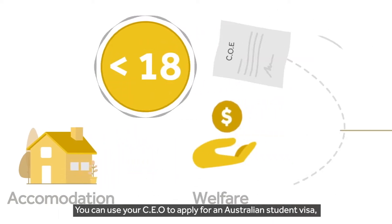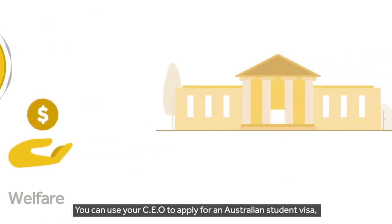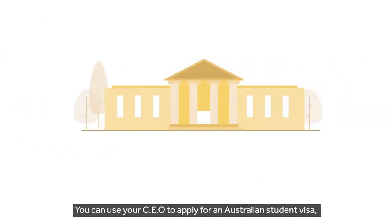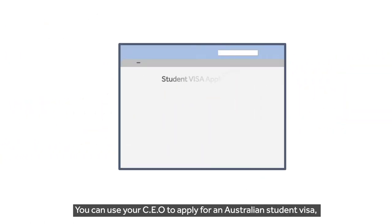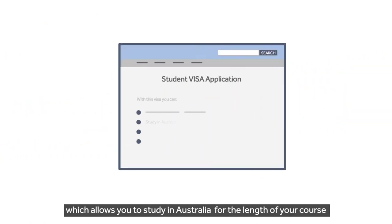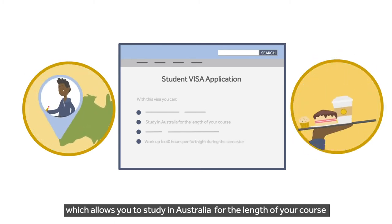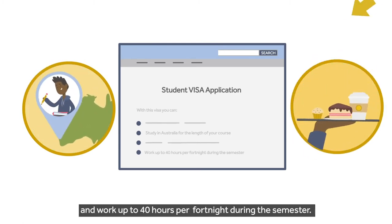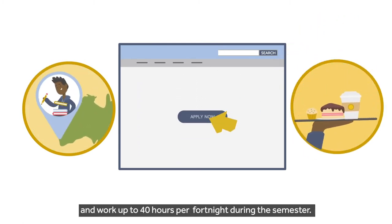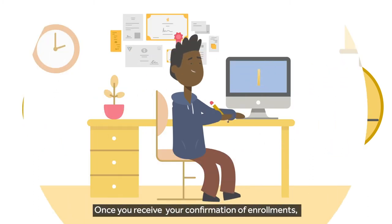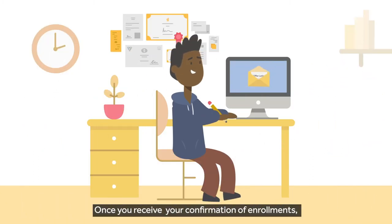You can use your COE to apply for an Australian student visa, which allows you to study in Australia for the length of your course, and work up to 40 hours per fortnight during the semester.